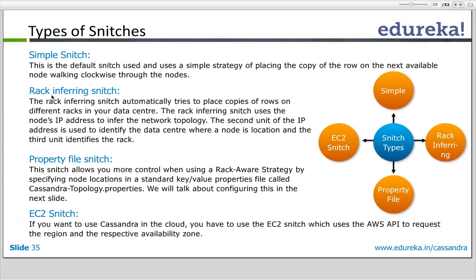How does the rack inferring snitch know about your rack and data center topology? It reads the IP address. The second octet of the IP address identifies the data center, and the third octet identifies the rack. For example, for IP address 110.98.100.10, '98' identifies the data center and '100' identifies the rack.